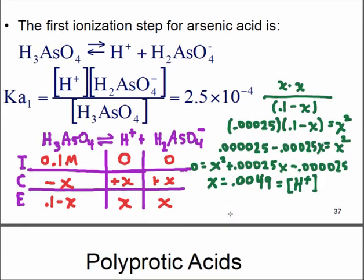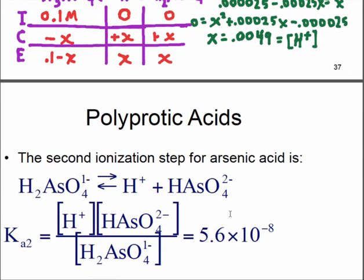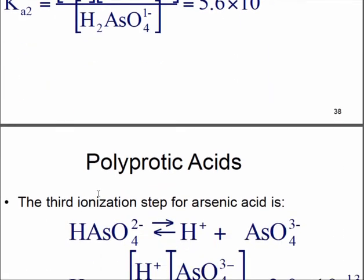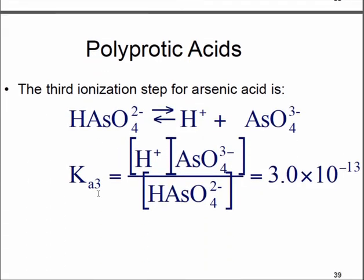The other constants that we could write for the second dissociation would be for this with the H plus and then this species on the top and this on the bottom. If we wanted to write the Ka3 for the third dissociation, it would be this species on the bottom and H plus on the top and the other conjugate base on the top as well. That number was super small.